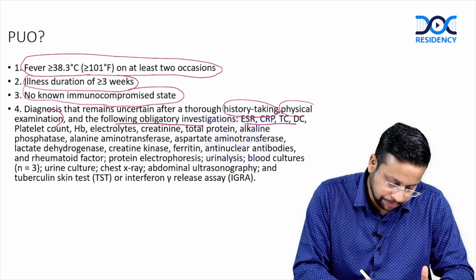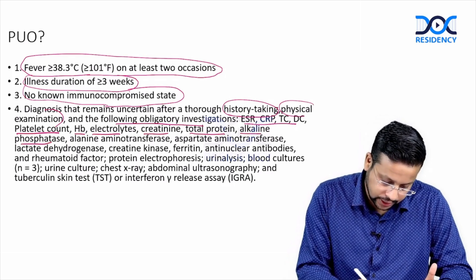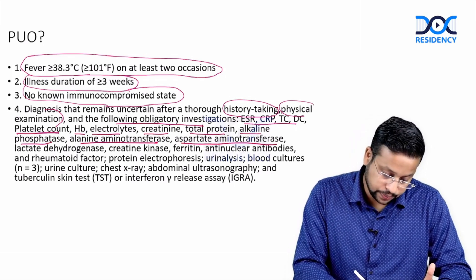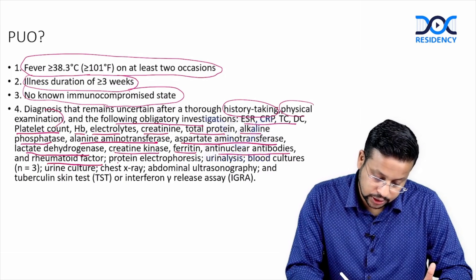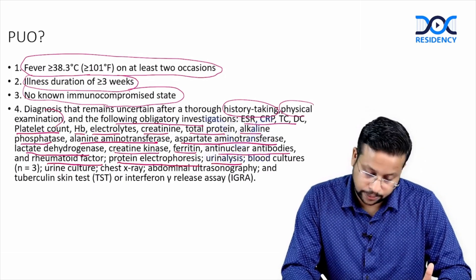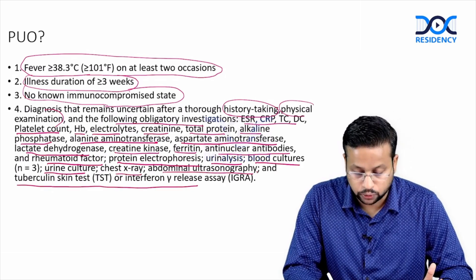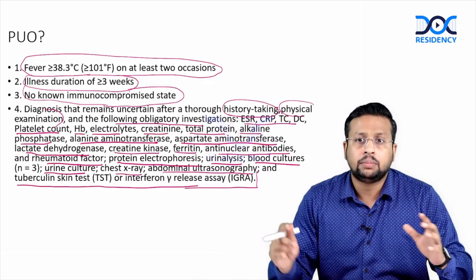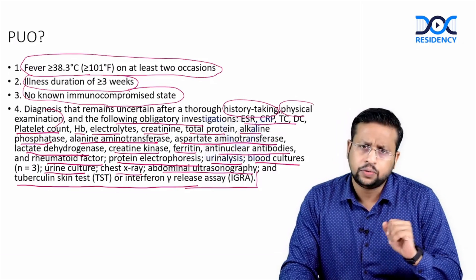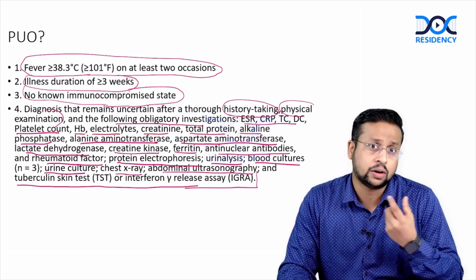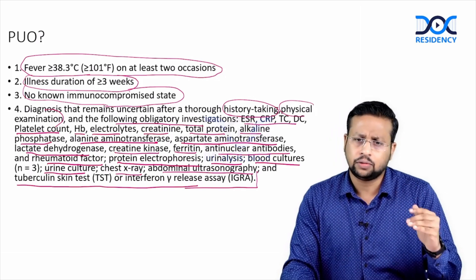The minimum obligatory investigations before calling it PUO include: ESR, CRP, total count, platelet count, hemoglobin, electrolytes, creatinine, total protein, alkaline phosphatase, ALT, AST, LDH, creatine kinase, ferritin, anti-nuclear antibodies, rheumatoid factor, serum protein electrophoresis, urine analysis, blood culture, urine culture, chest X-ray, abdominal ultrasound, and tuberculin skin test or interferon gamma release assay. In this patient, the fever duration is only 12 days and not all investigations are done, so this cannot be called PUO — it's prolonged fever, but not PUO.